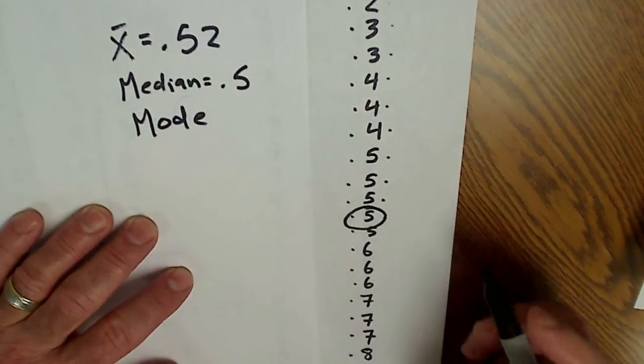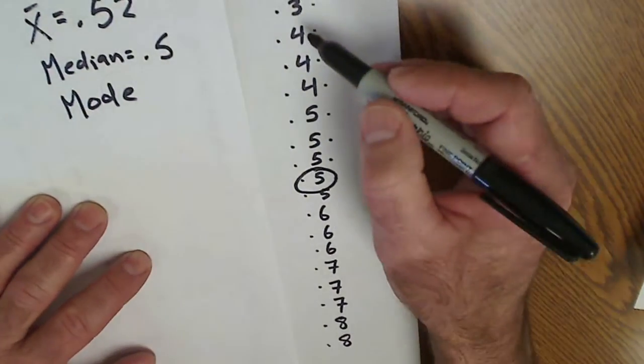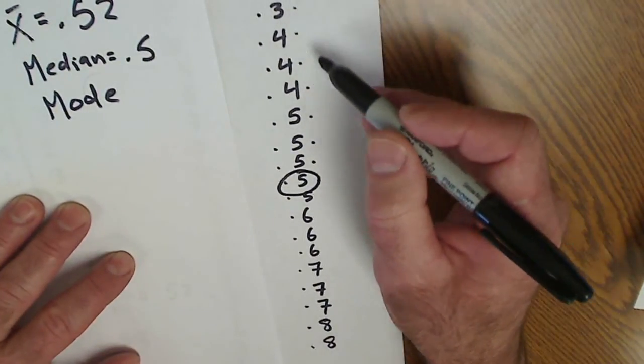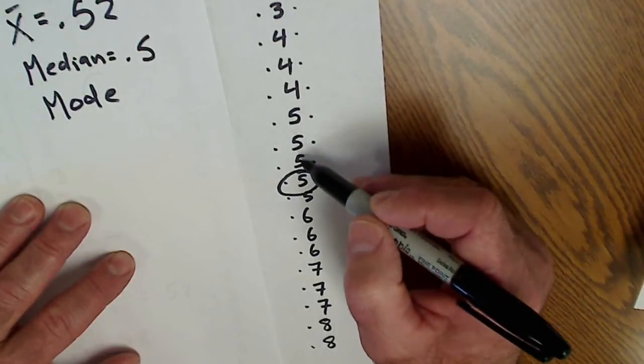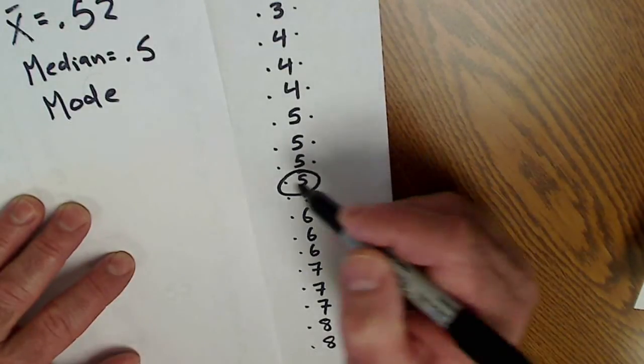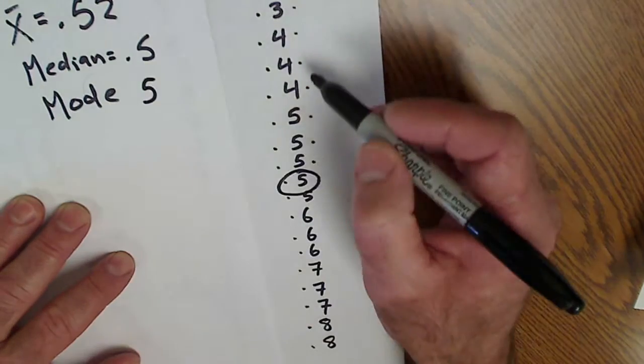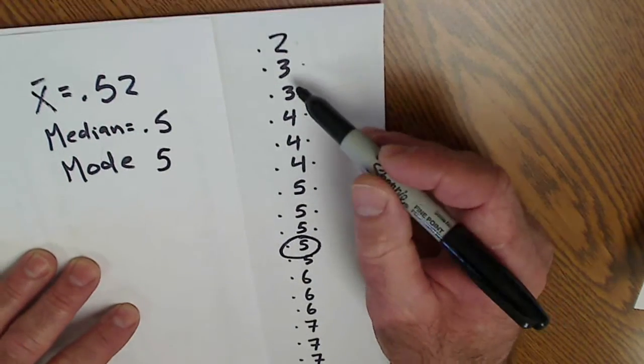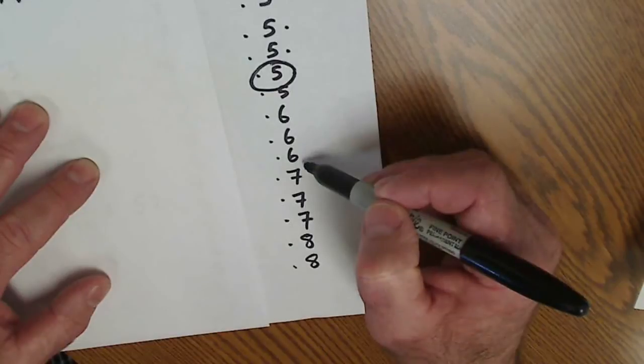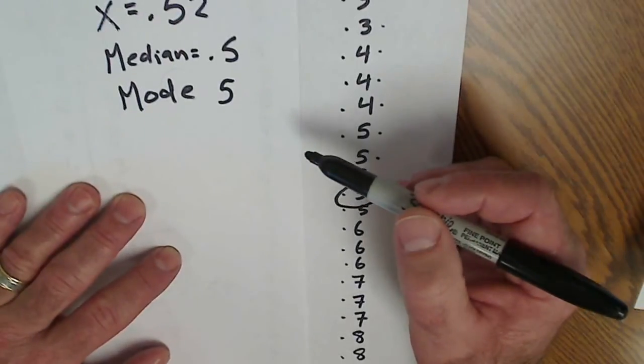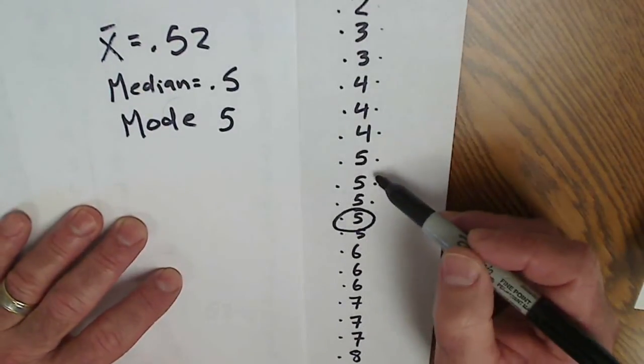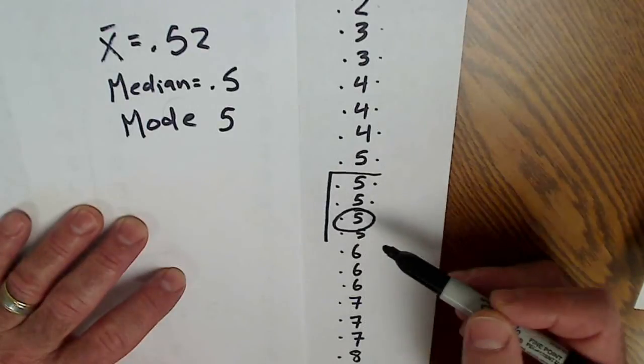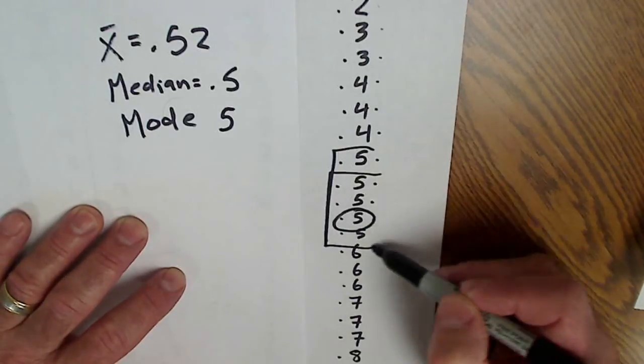The mode is the one that appears most frequently. So as I look at this list here, I see the mode. I have one, two, three, four, five fives. So my mode is five. I have three fours, two threes, three sixes. So the one that appears most frequently is the value 0.5, because I have five of them.